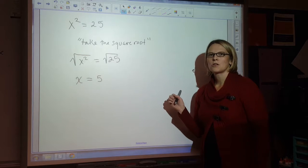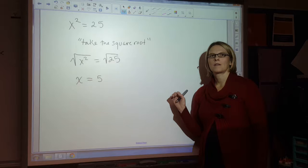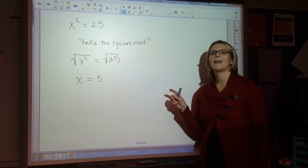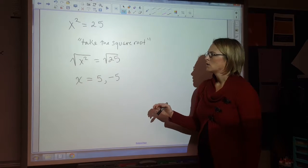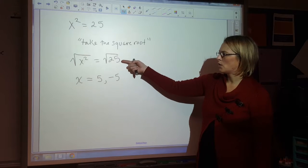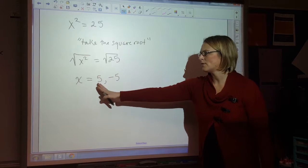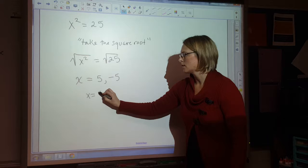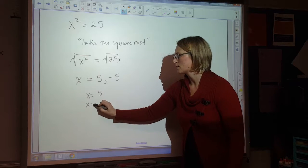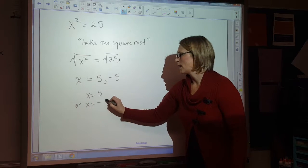Is there another answer? What is a negative times a negative? Negative five. So my solution could be five or negative five. So I'm looking for a number when multiplied by itself makes 25. So either five times five or negative five times negative five. So just to be clear, it's either x equals five or x equals negative five.